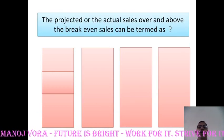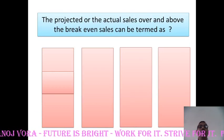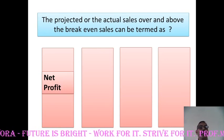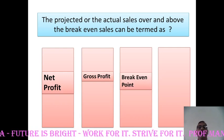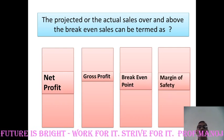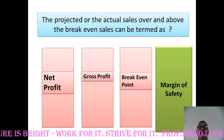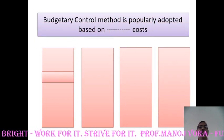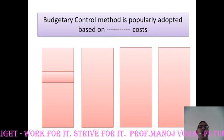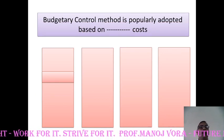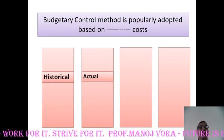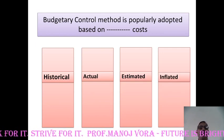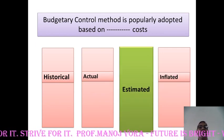Your next question: the projected or the actual sales over and above the breakeven sales can be termed as — net profit, gross profit, breakeven point, or margin of safety. Your right answer has to be margin of safety. Budgetary control method is popularly adopted based on dash costs — historical costs, actual costs, estimated costs, or inflated costs. Your right answer has to be estimated costs. A budget is always based on estimations, projecting future values.